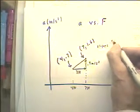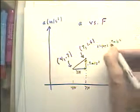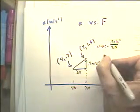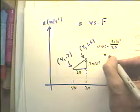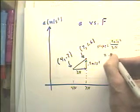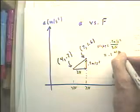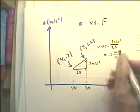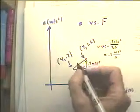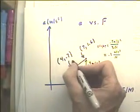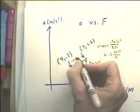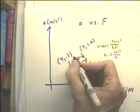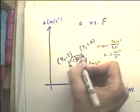...is 0.9 meters per second squared over three newtons, which is 0.3 meters per second squared per newton. So the slope here is 0.3 meters per second squared per newton.